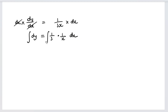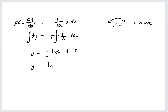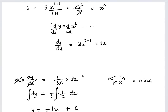We can integrate both sides. Since 1/3 is a constant I pull it out. Integrating dy gives y, and integrating 1/x gives ln x, so we have y equal to (1/3) ln x plus some constant c. If you want, you can move the 1/3 to the exponent using log rules — recall that n·ln x equals ln(x^n) — so the answer can also be written as y equals ln(x^(1/3)) plus c.